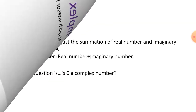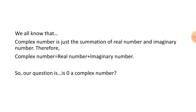We all know that complex numbers are the summation of real numbers and imaginary numbers. Any number we can think of is known as a real number, and imaginary numbers are numbers whose square equals a negative number. Therefore, a complex number equals a real number plus an imaginary number.